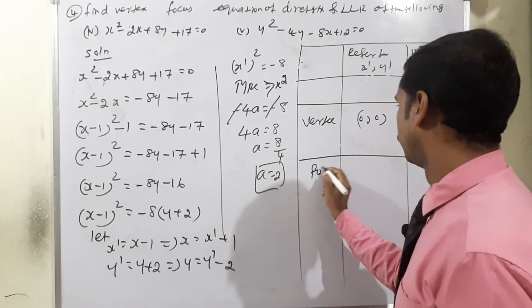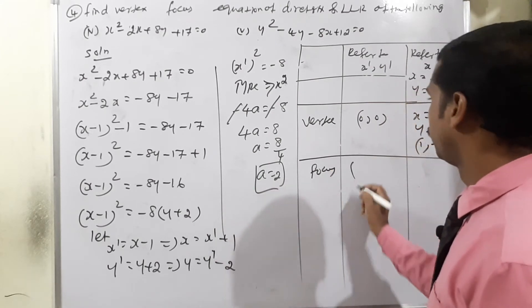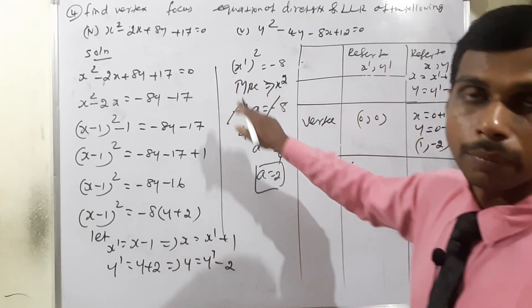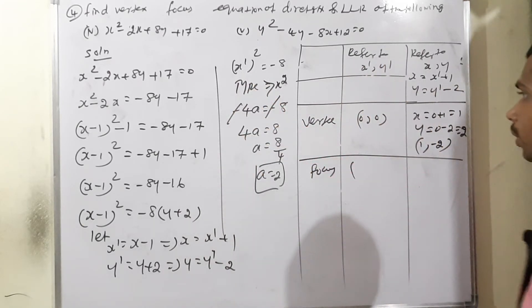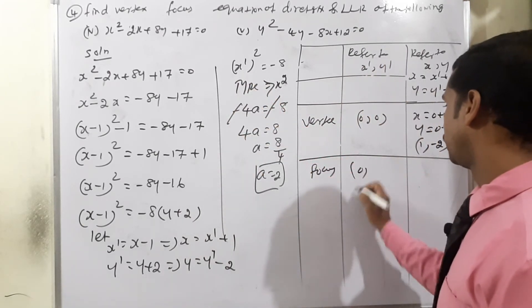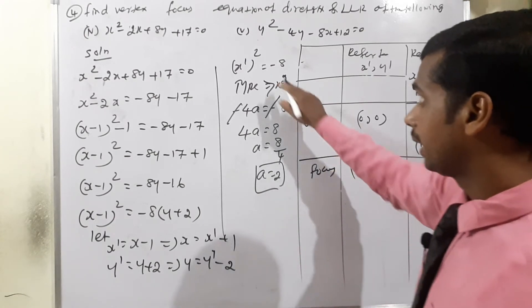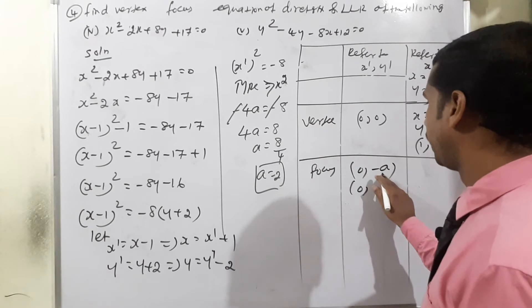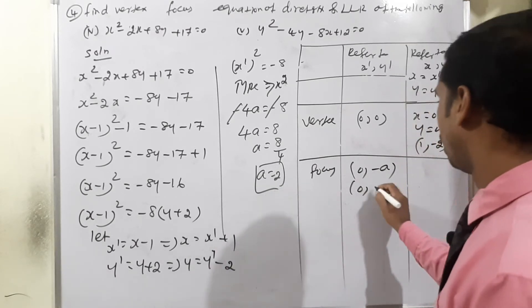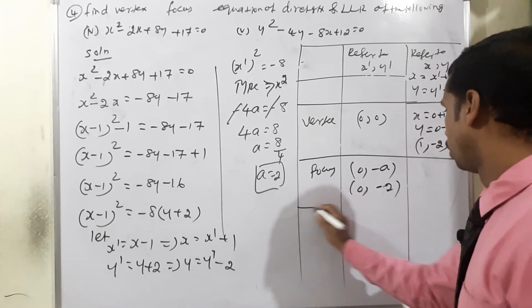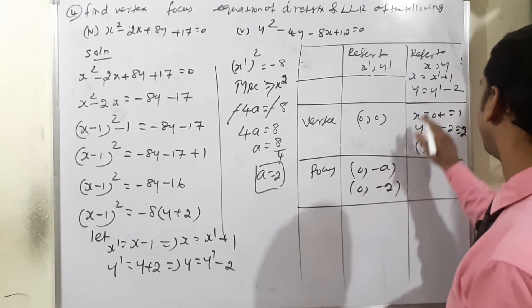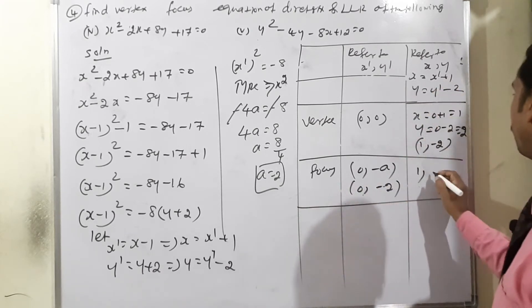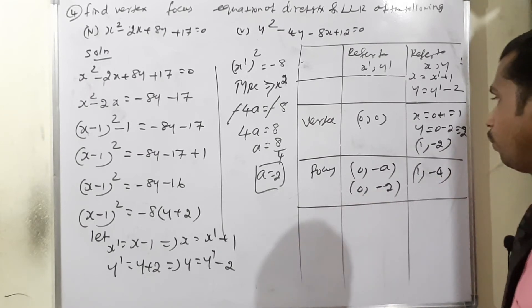For focus: open downward means focus is at (0, -a) in x'y' system, so x' = 0 and y' = -2. Converting: x = 0 + 1 = 1, y = -2 - 2 = -4. Therefore focus is at (1, -4).